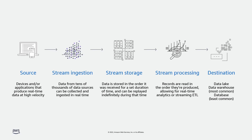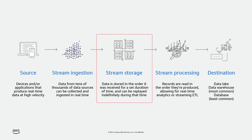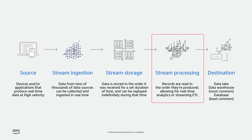Let's look at how data is streamed. At a very basic level, all stream processing applications include five stages. The process begins with data generated by multiple sources, or producers. Second is stream ingestion, when data from tens of thousands of data sources is collected and ingested in real time. The third stage is stream storage, where data is stored in the order received for a set duration and can be replayed indefinitely during that time. The fourth stage, stream processing, is when the stored data is analyzed to gain insights.